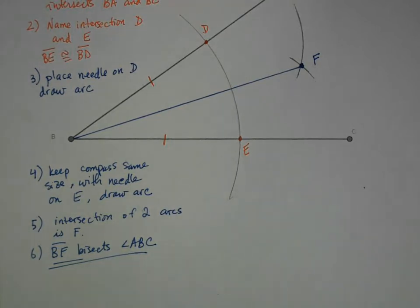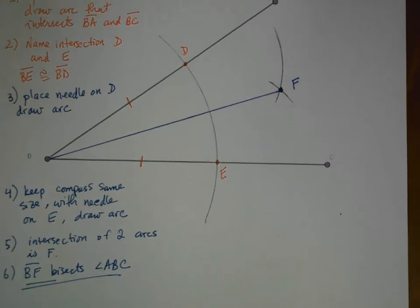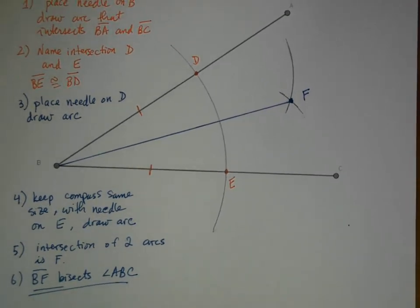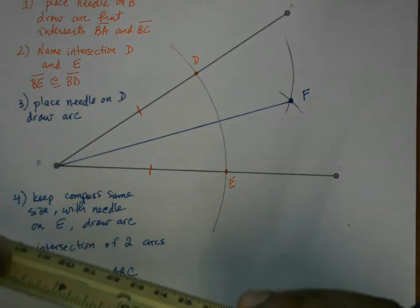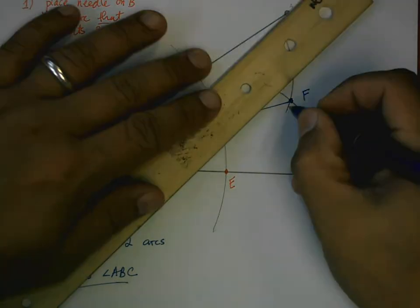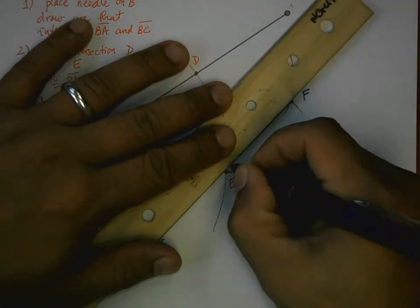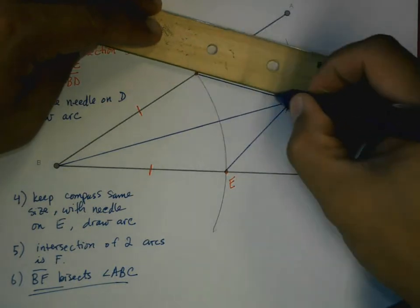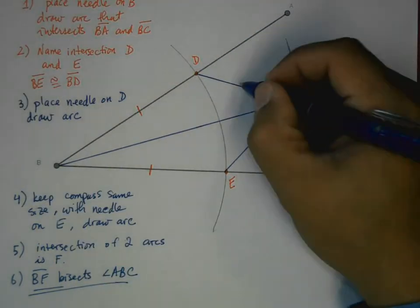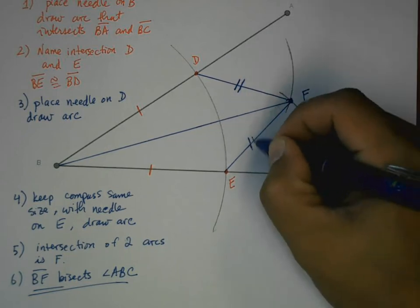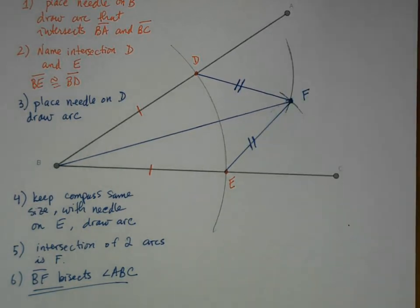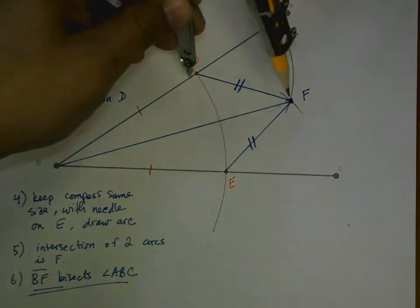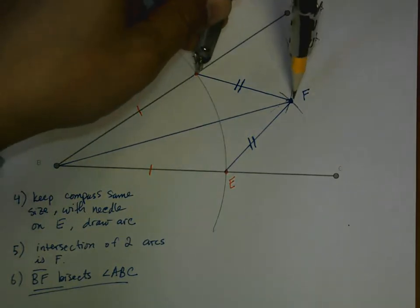Now we've done this before and hopefully you're familiar with it. But what's new about today is that we need to show why this works. Why is it exactly that this process always works? Well, let me show you something. Let me connect E to F and D to F.